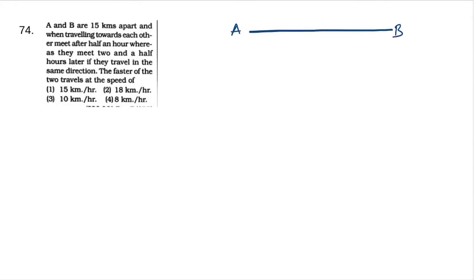Suppose A and B have 15 km distance between them. If the speed is S1 and the speed is S2, and they move in the opposite direction, the net speed is S1 plus S2 equals total distance 15 km divided by time. Time is half an hour, so we get 30 km per hour.